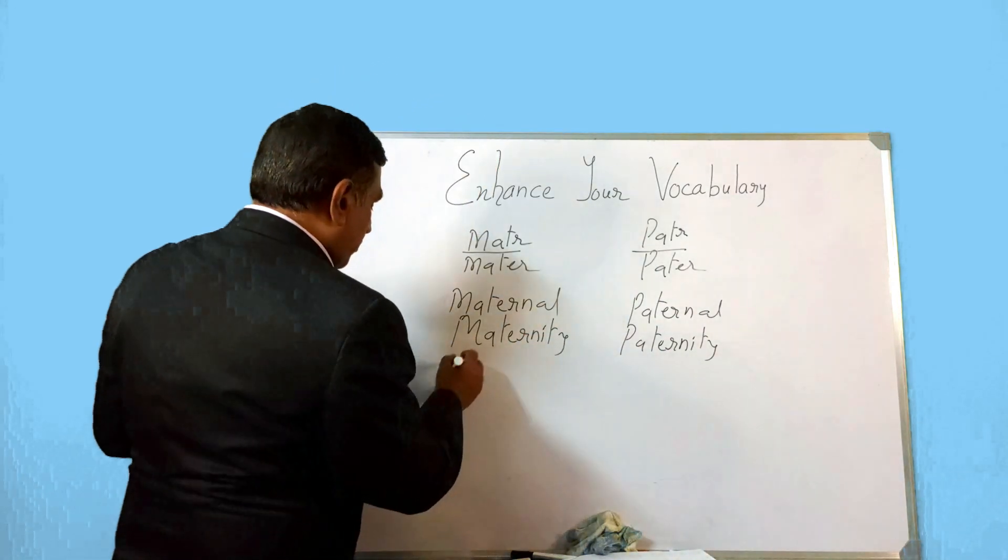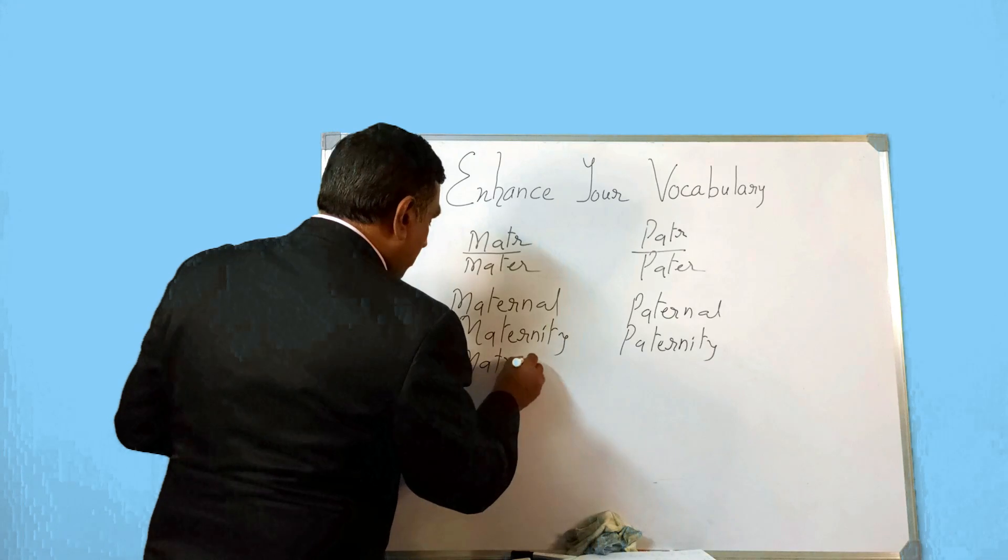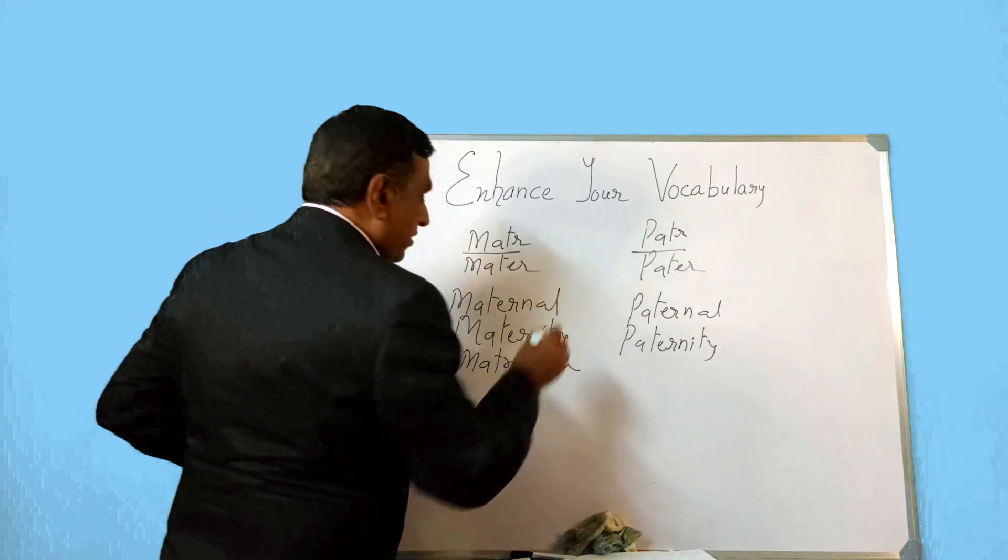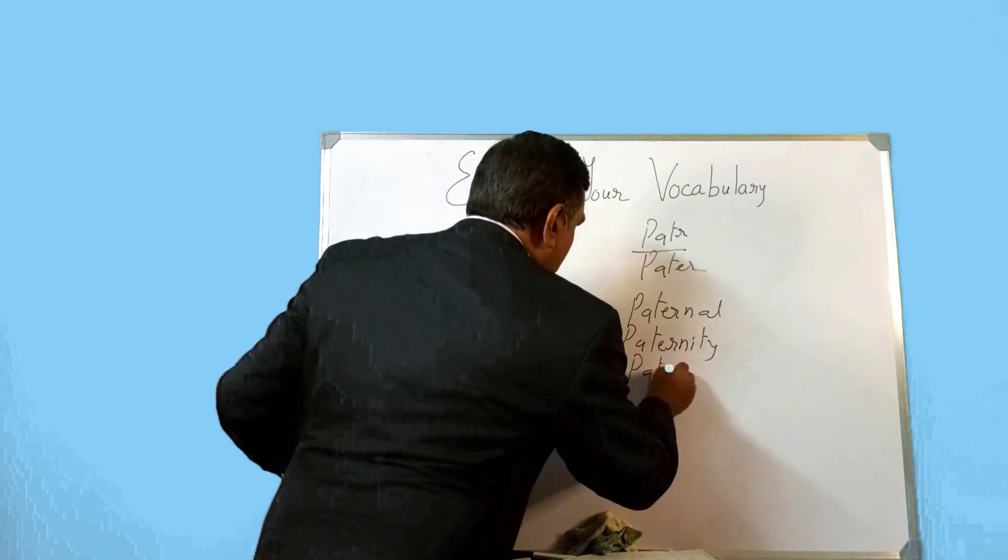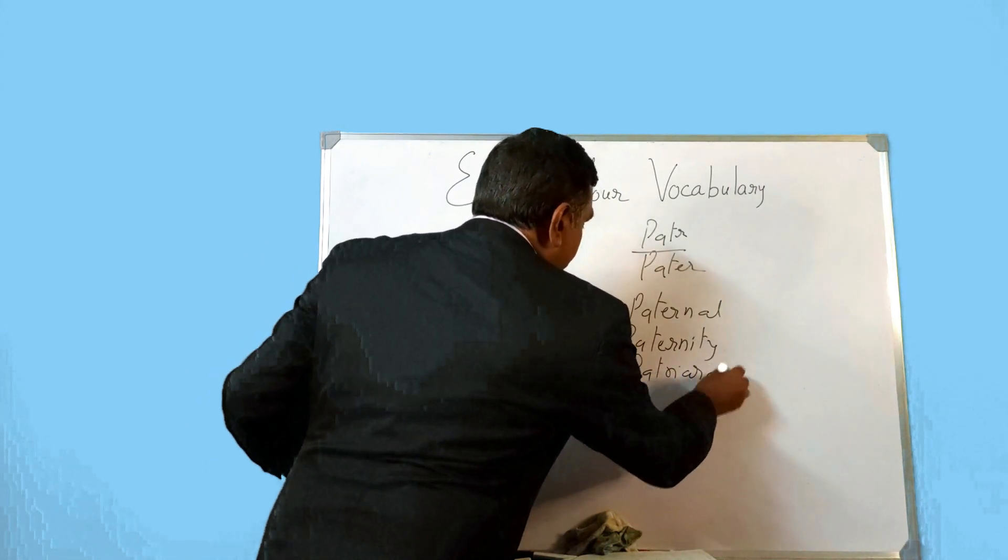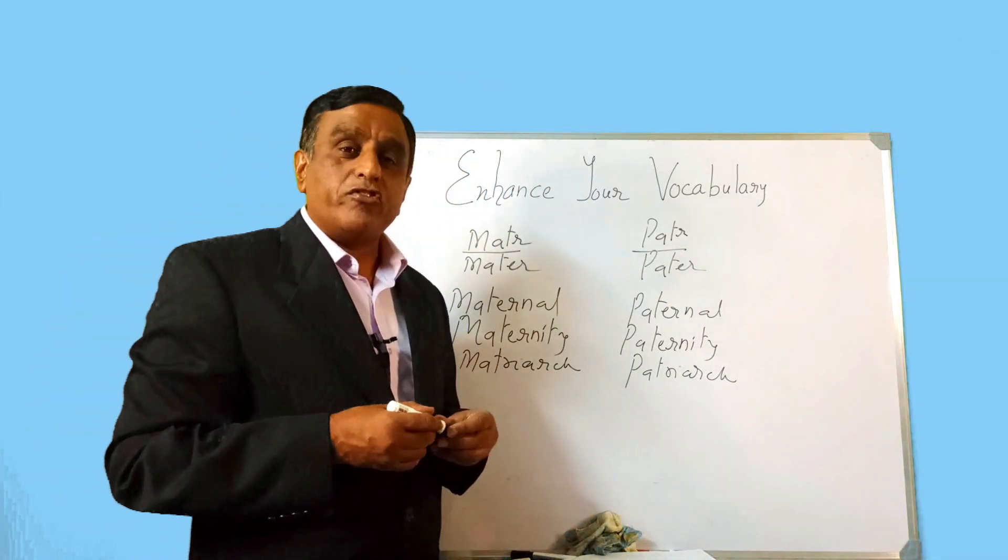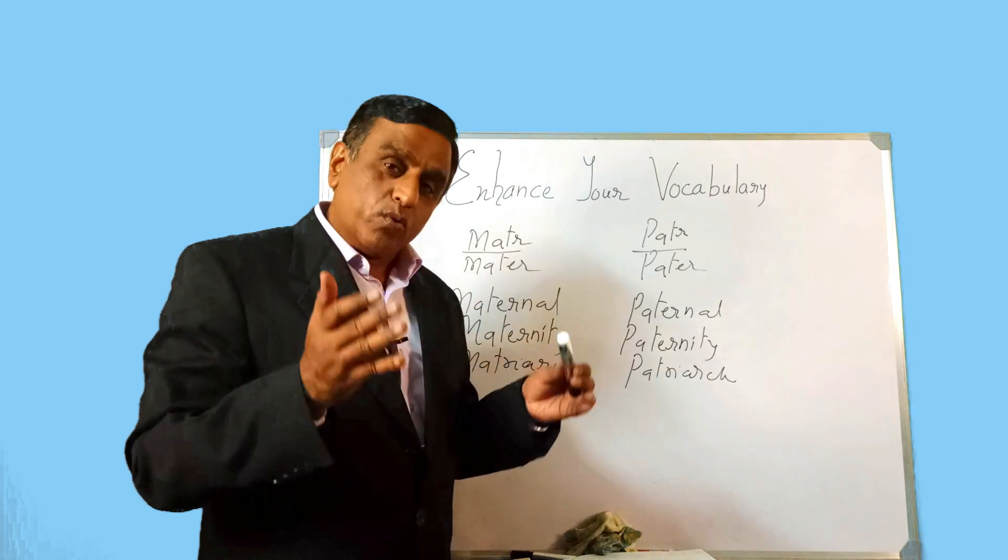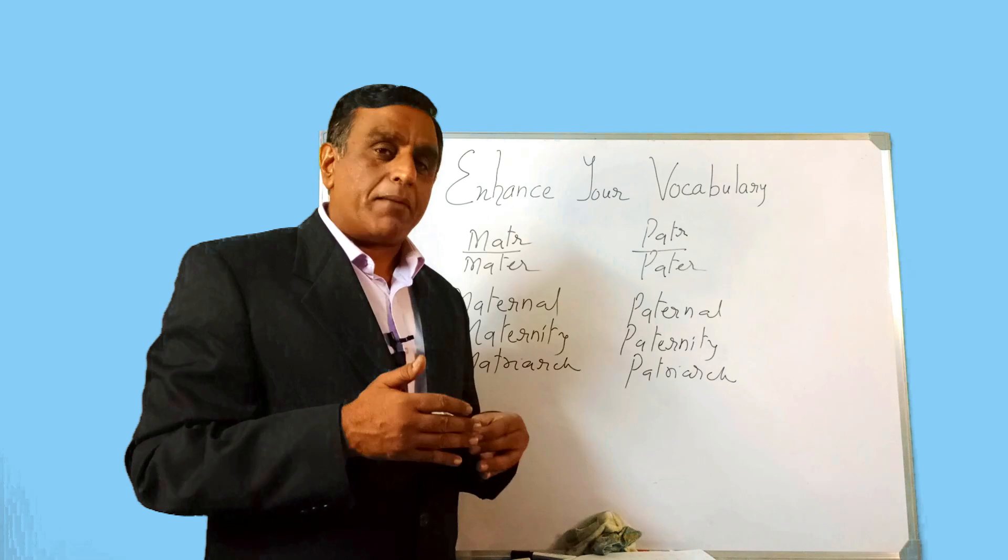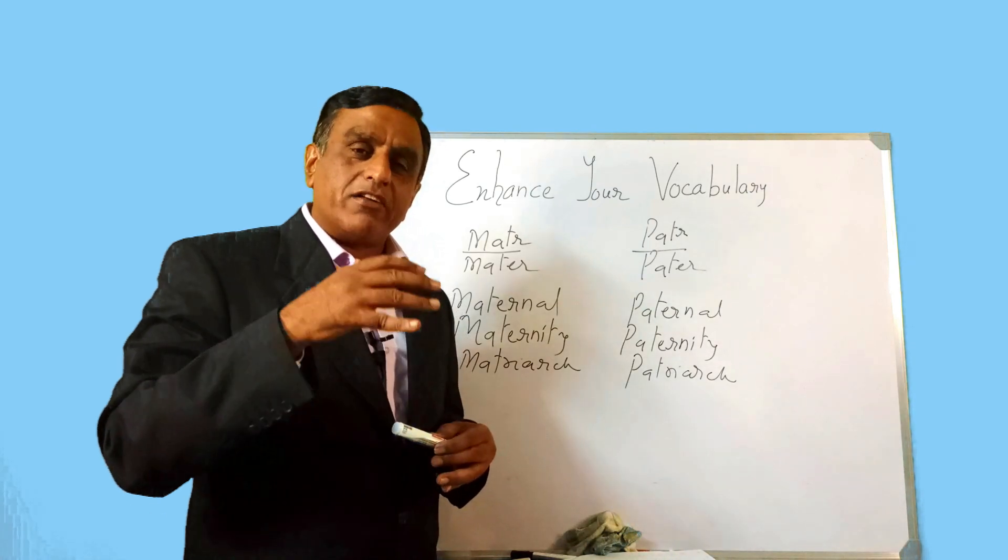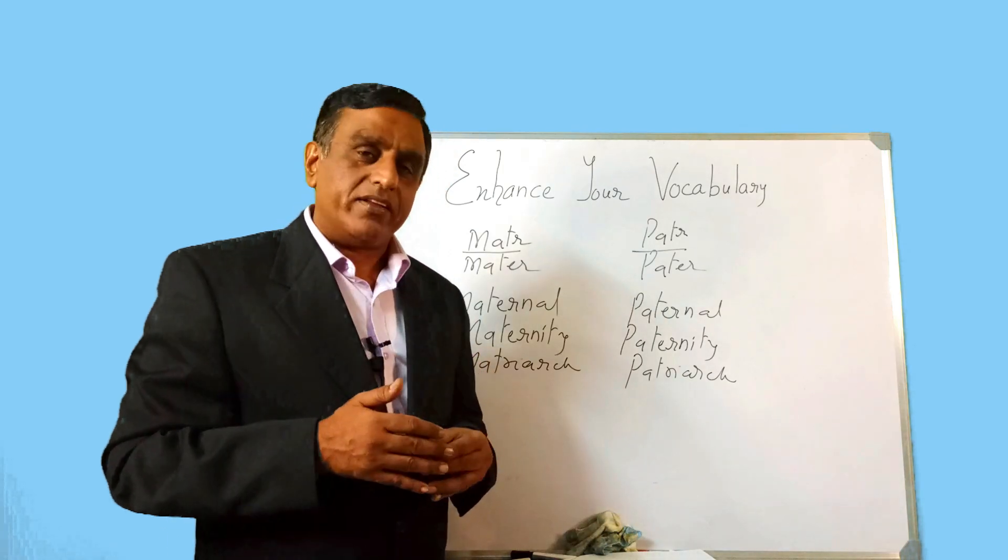Now also your word like matriarch and the corresponding word will be patriarch. Matriarch is mother. Arch is rule. Mother's rule is called matriarch. So you have certain families where the head of the family is a lady. So such families are called matriarchal families.